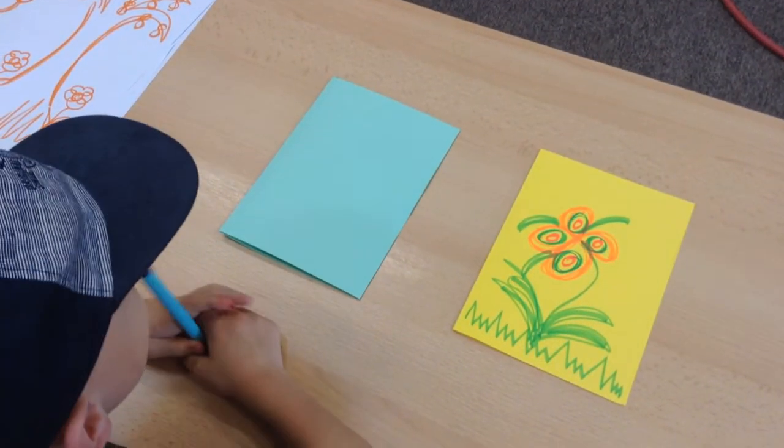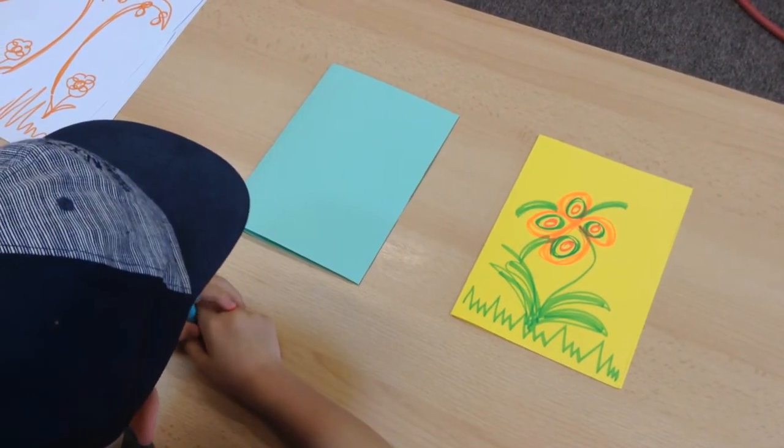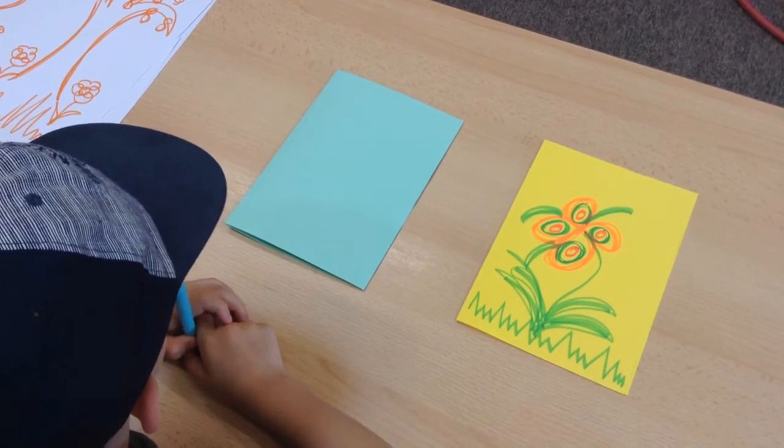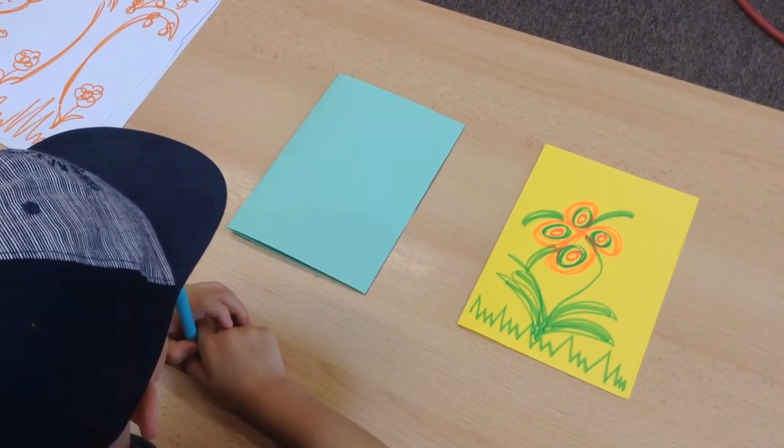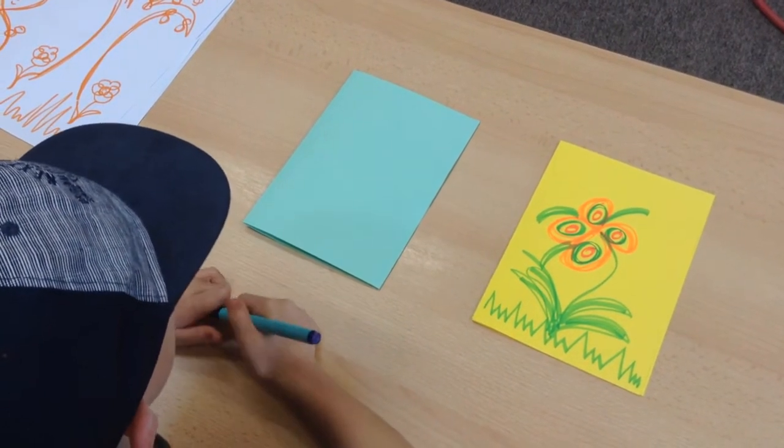Here you can see that the children could even use the circles and eights to create their own card, maybe to send to someone else in their family or their friends. We're going to watch as a butterfly is created now on this card using different colors.